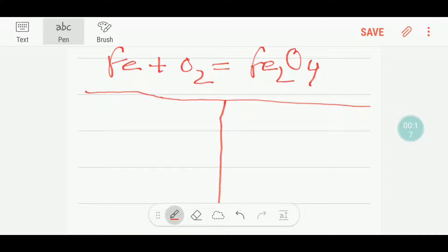I have to count the number of atoms on the left side and right side. Here we have one iron and here we have two oxygen. On the right hand side, your product side, we have here two iron and we have here four oxygen, right?